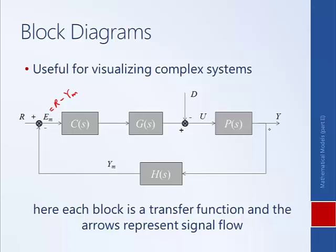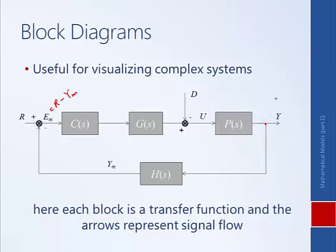We also have the branching point. Anywhere that a line is branched off, the signal is unchanged. So the output of the whole block diagram is Y, and where we branch it off, the signal is also Y. We will come back to block diagrams later in the semester.